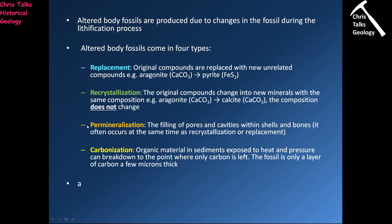The third type of altered body fossil is permineralization — the process by which pores and cavities within shells and bones get filled by a mineral. Bone is absolutely stuffed with cavities and pores, and as part of the lithification process fluids passing through the rock cause minerals to be deposited inside those pores. Permineralization typically occurs along with either replacement or recrystallization, so whilst the bone is being fossilised the minerals may be replaced or recrystallised whilst the pores are being filled with new minerals — these processes work in tandem.